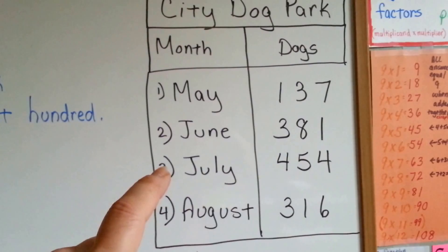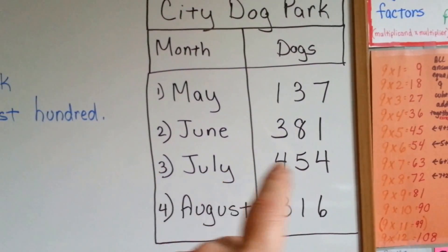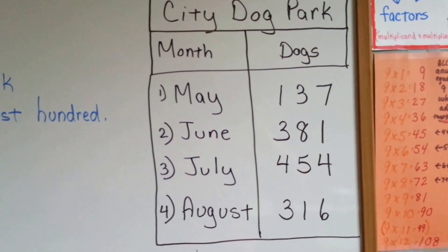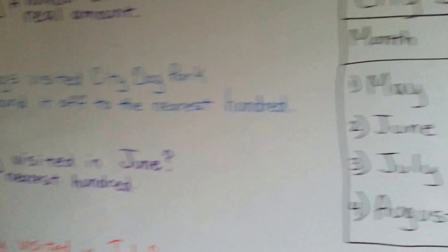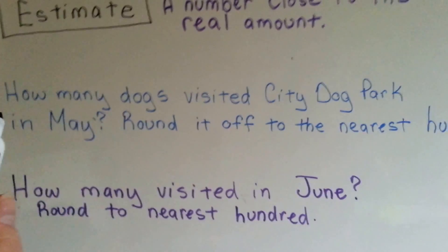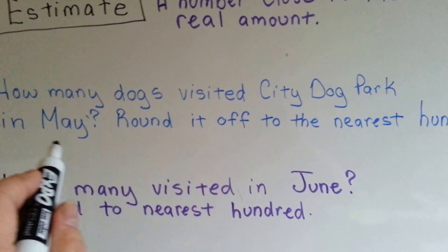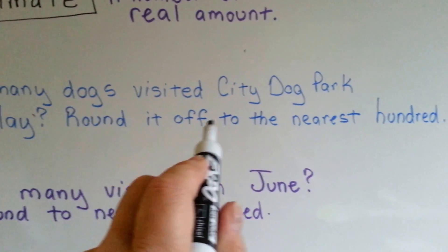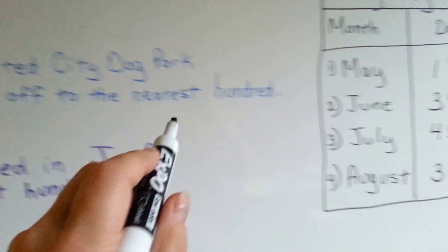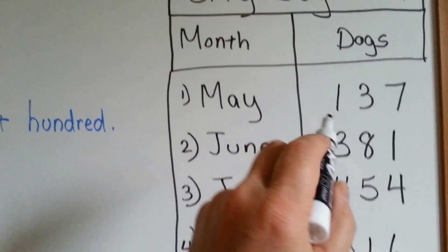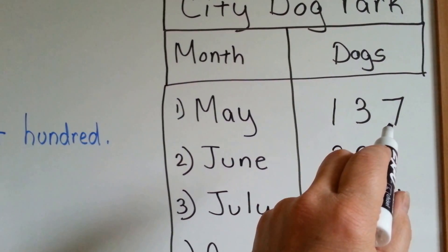You can see that July had the most, maybe because it was right in the middle of the summer. So let's see what we need to do here. How many dogs visited City Dog Park in May? Round it off to the nearest hundred. Well, here's May, and it said 137 dogs visited.